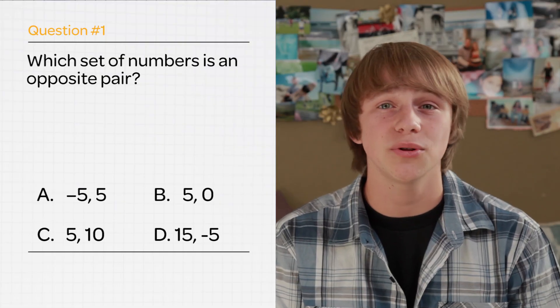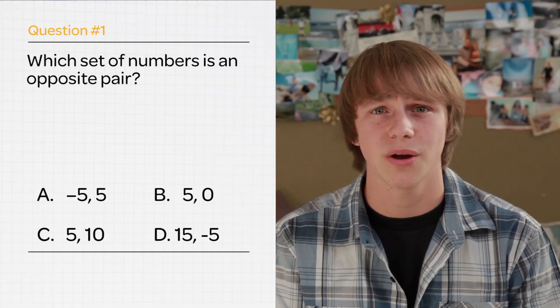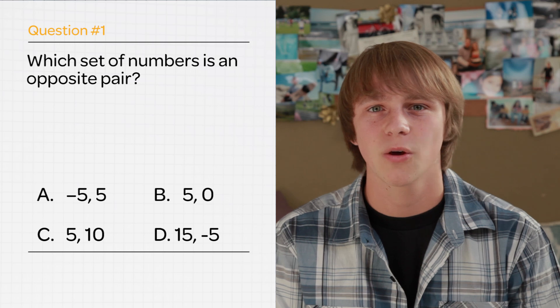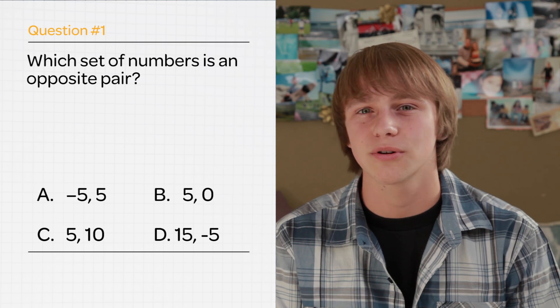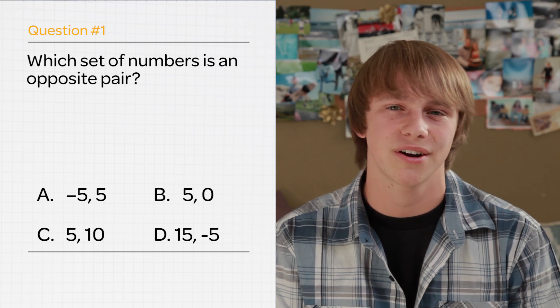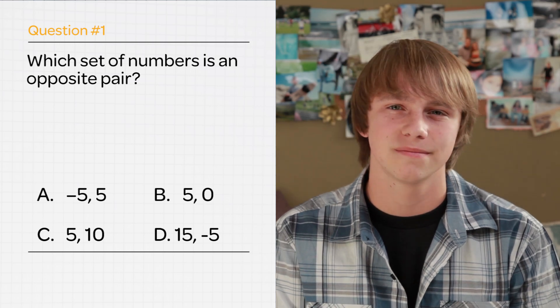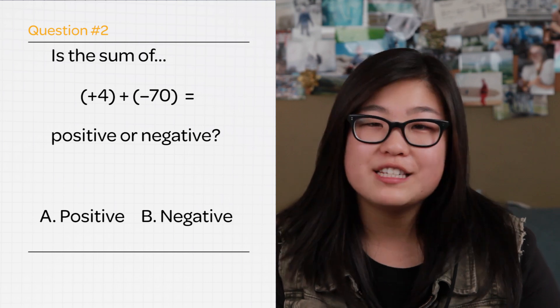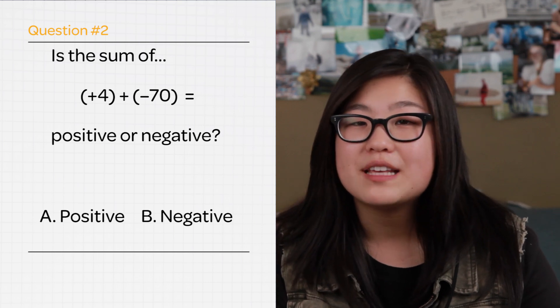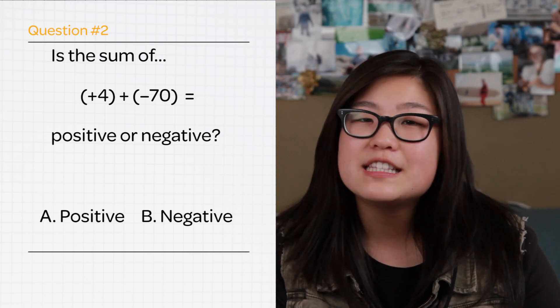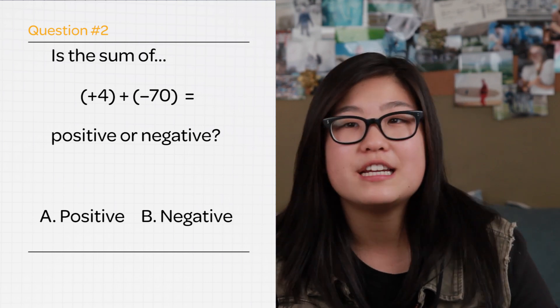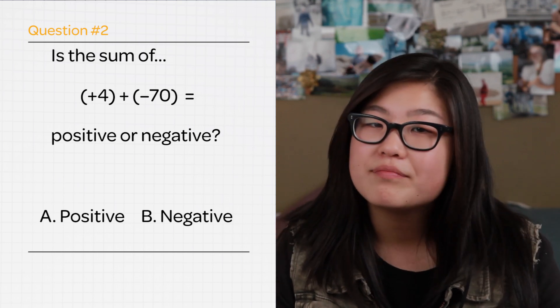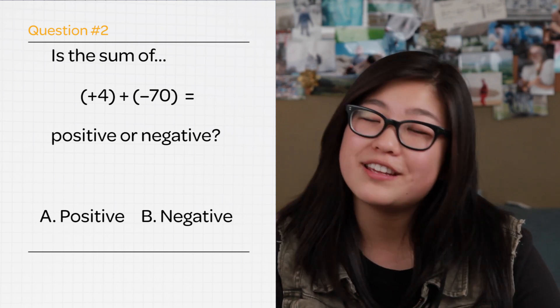Let's start off with a couple of questions pulled from the episode. Which set of numbers is an opposite pair? If we add positive 4 and negative 70, is our answer gonna be positive or negative? Here's a hint.